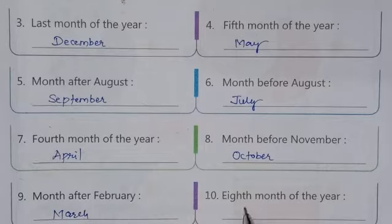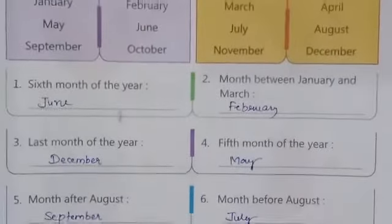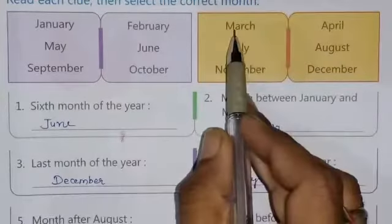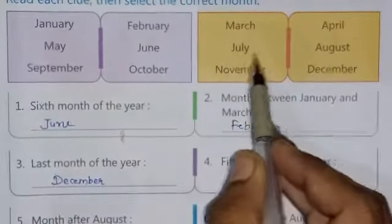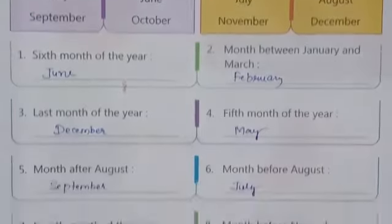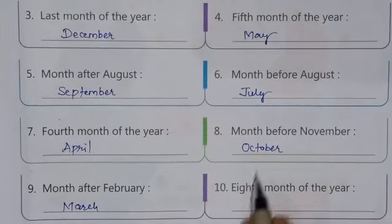Question number ten: the eighth month of the year. Which month is the eighth? Counting through the list — first, second, third, fourth, fifth, sixth, seventh, eighth — so the eighth month is August. Write down the answer: August. A-U-G-U-S-T.